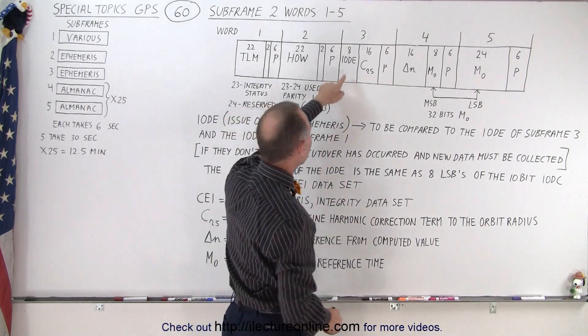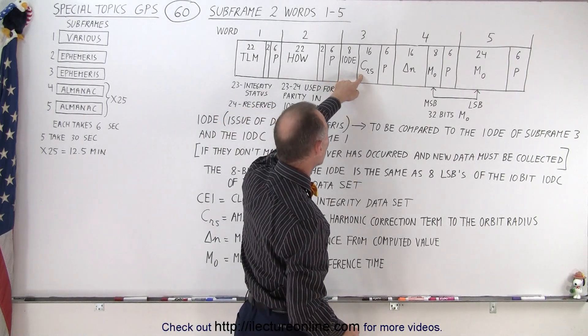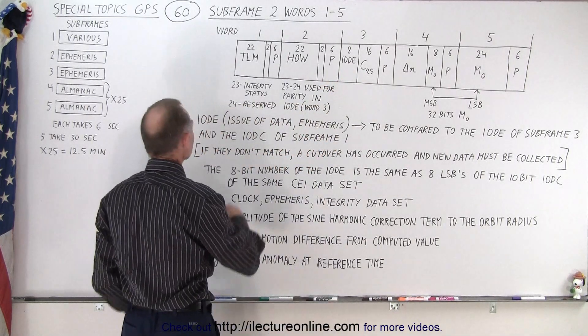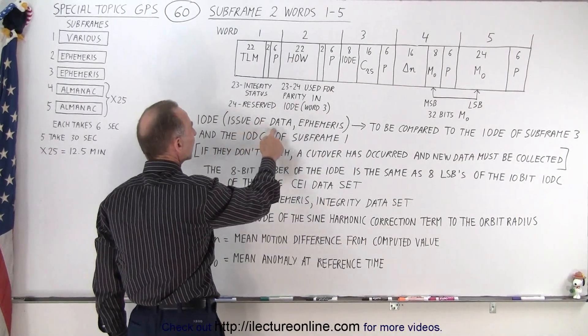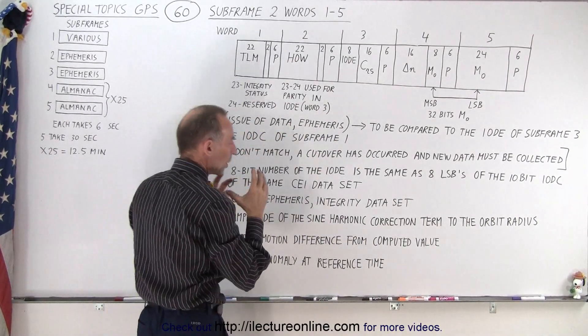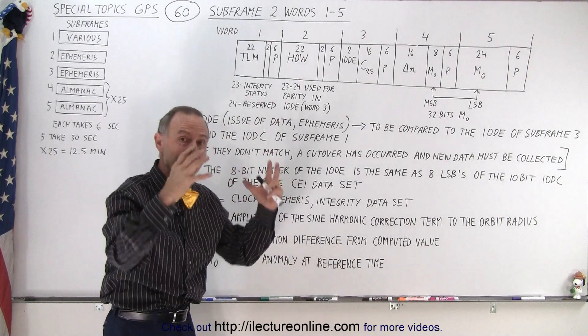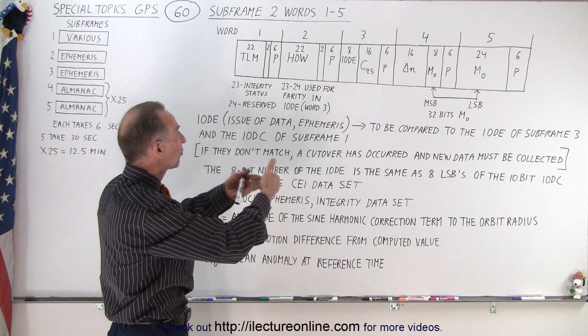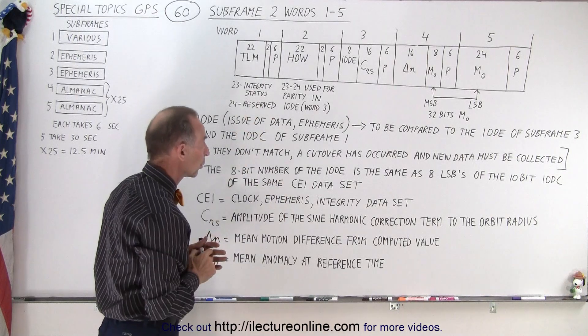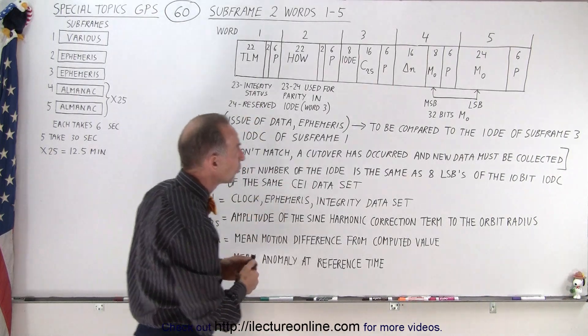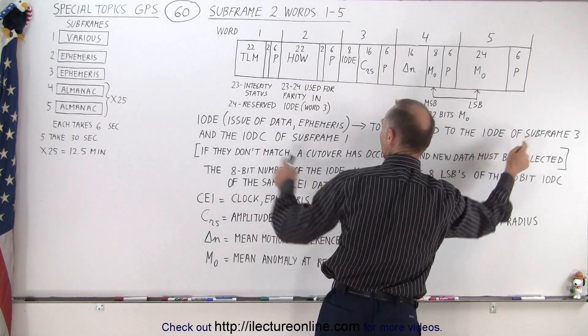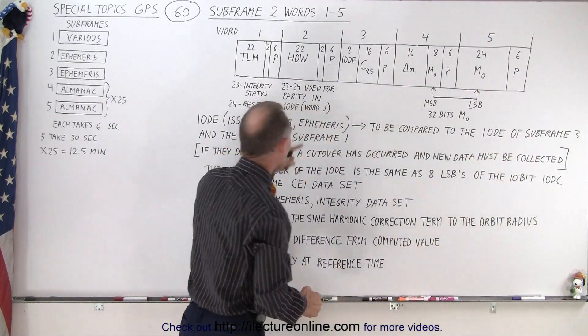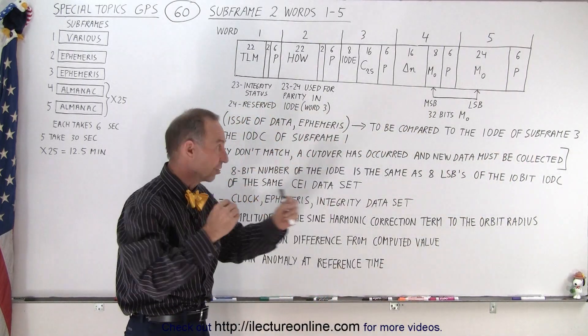In the third word we have the IODE and the C sub RS. Now what is the IODE? That is the Issue of Data Ephemeris. So we want to make sure that we know which data set, which ephemeris data set that we're dealing with. And so we're going to receive that in the third word. And then we're going to compare that to the IODE of the subframe 3 and the IODC of subframe 1 to make sure that they're synced up.